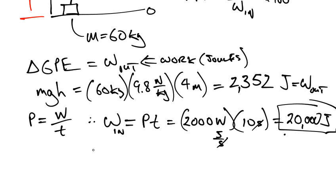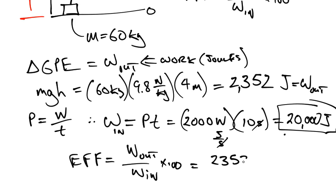So therefore, in order to calculate the efficiency, all we need to do is say work out divided by work in times 100, which is work out was 2,352 joules divided by 20,000 joules.